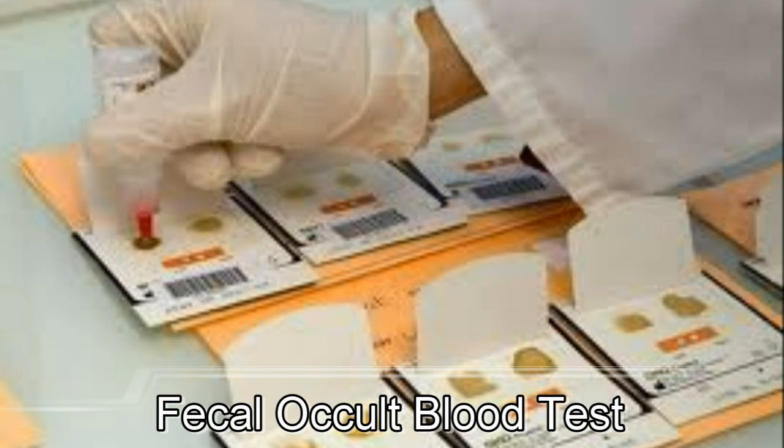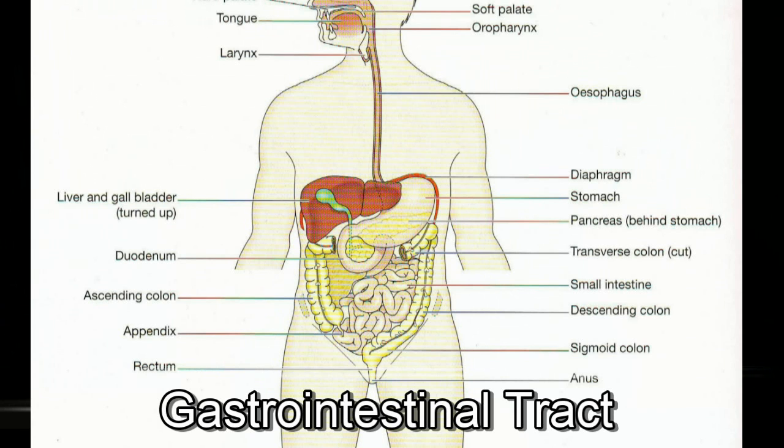Fecal Occult Blood Test, or FOBT, is a test that we use to detect a small amount of bleeding in the gastrointestinal tract. Usually, we require approximately 200 cc or half a pint or more of blood to be able to visually recognize bleeding. Using FOBT, we can detect bleeding that is as little as 10 cc or two tablespoons full of blood in the stool.